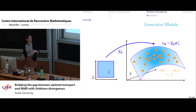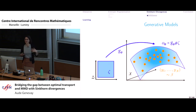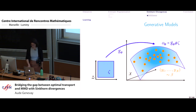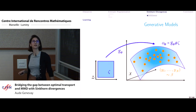Hopefully I've convinced you that Sinkhorn divergences are a good notion of distance to use in minimization problems over measures. We can use them for something more complicated than just point cloud fitting: the application here is generative models.